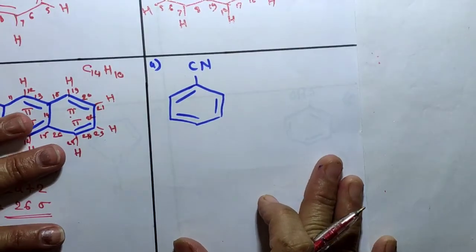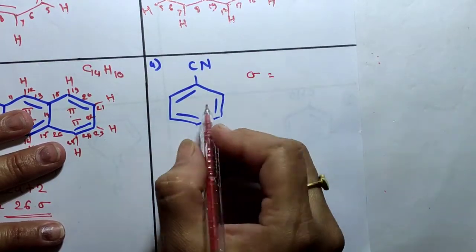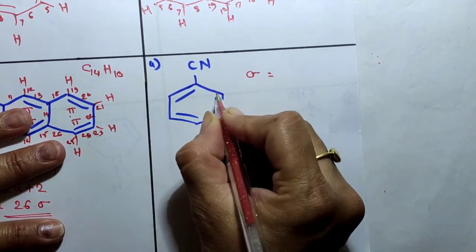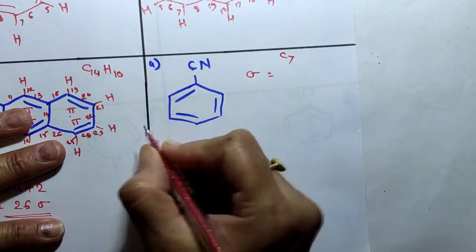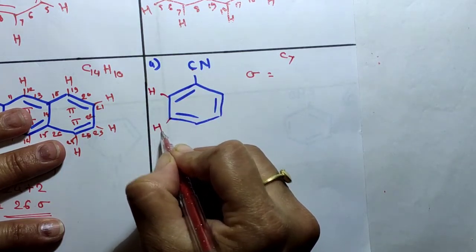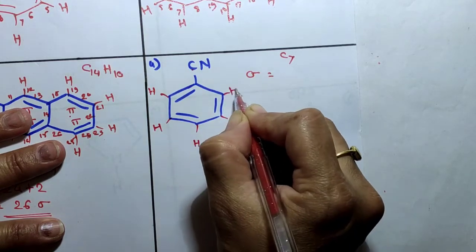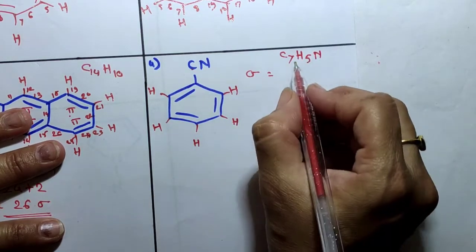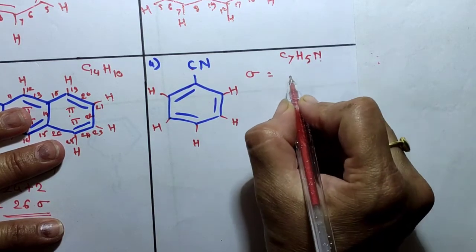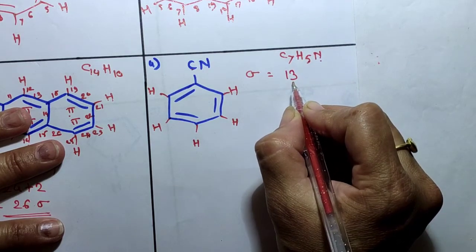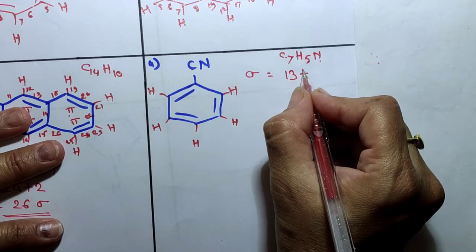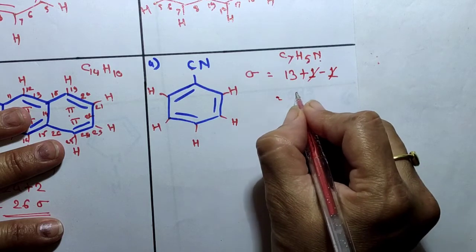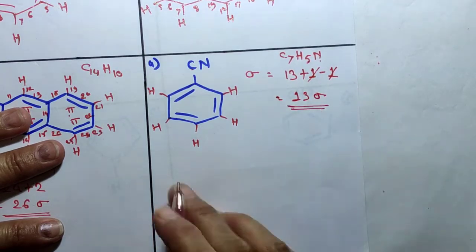Next: cyanobenzene. To calculate sigma bonds, count total number of atoms: carbon = 7 (C7), hydrogen = 5 (H5), nitrogen = 1 (N1). Total number of atoms = 13. Plus number of rings = 1, minus 1 — the 1 and 1 cancel. Therefore 13 sigma bonds are present in cyanobenzene.